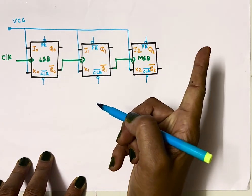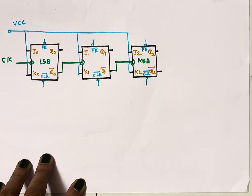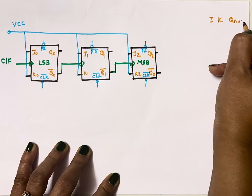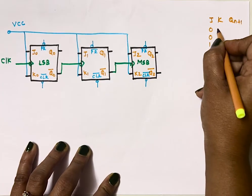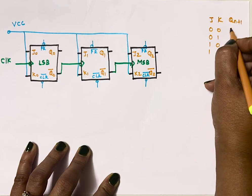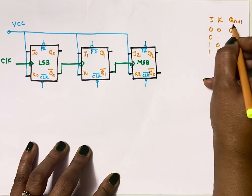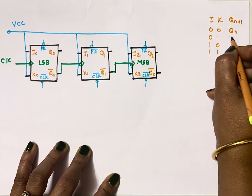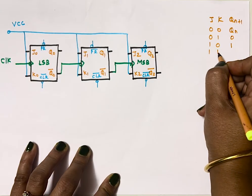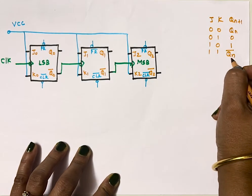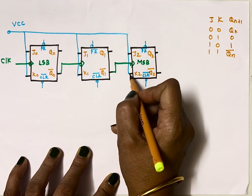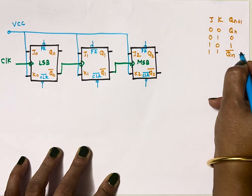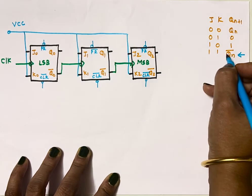Let me write the truth table of the JK flip-flop: when both inputs are 0, the next state remains the same as the present state; when input is 01, output is 0; for 10, it is 1; and when both inputs are 1, the next state is always the complement of the present state. Since J and K of every flip-flop are connected to 1, our counter will always work in the toggle state.